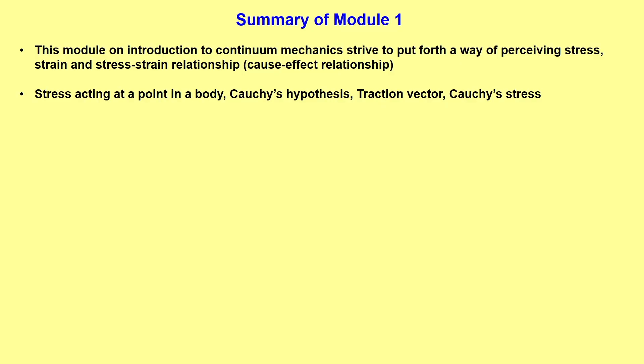We started off with the concept of stress acting on a body, or stress acting at a point in the body. For that, we discussed Cauchy's hypothesis and the concept of traction. Based on the traction and using Cauchy's formula, we evolved Cauchy's stress, which is the stress acting at a point. It was a 3×3 matrix formulation with 9 stress components.